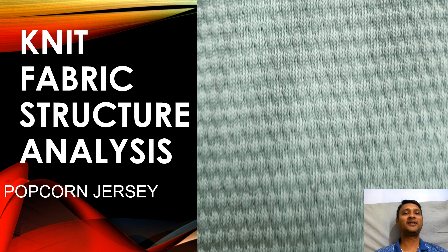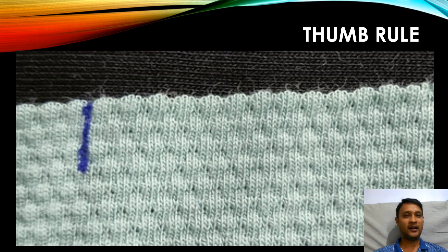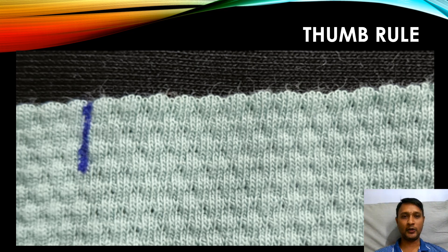Hi, hello everyone, welcome to Money Text Group. In this video we are going to learn about knit fabric structure analysis of a popcorn jersey. Before we start our structure analysis, as usual we need to follow our thumb rule: we need to remove all the loosened threads and draw a vertical line to get a perfect knit structure analysis.